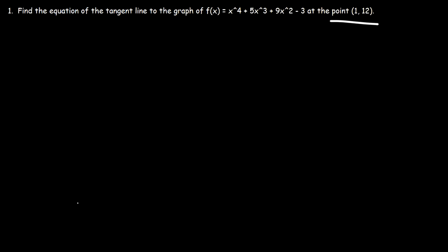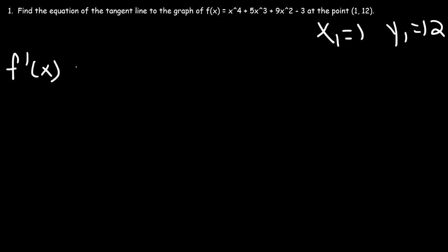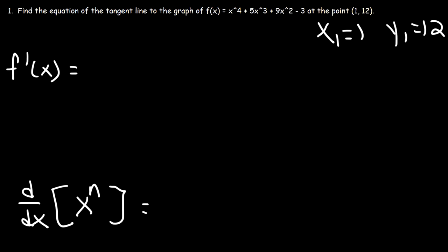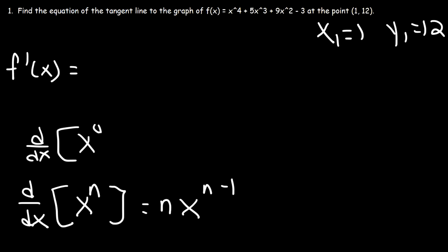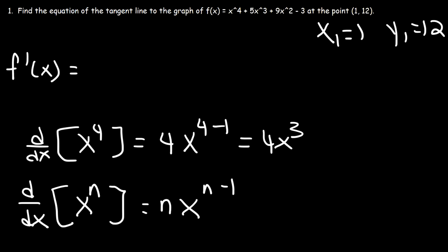We already have our point, so x1 is 1 and y1 is 12. All we need to do is calculate the slope by finding the first derivative, f prime of x. The derivative of x to the n — the power rule — is nx to the n minus 1. So the derivative of x to the 4th power is 4x cubed.